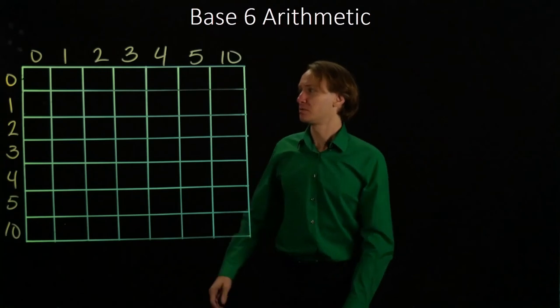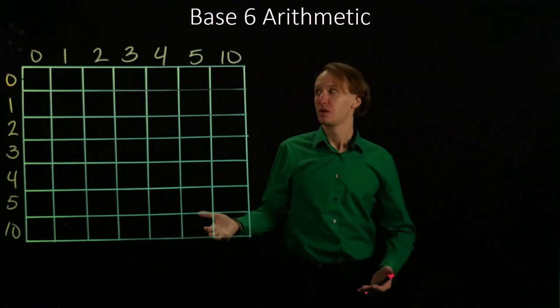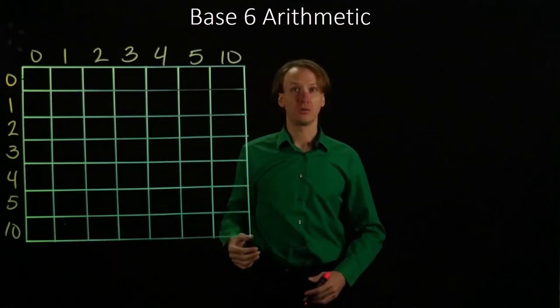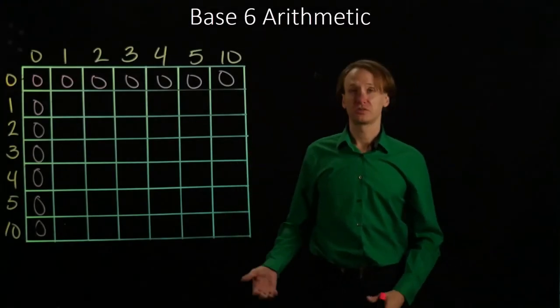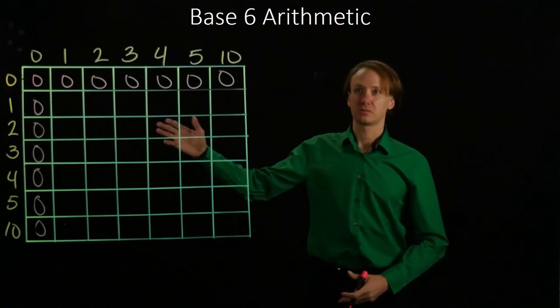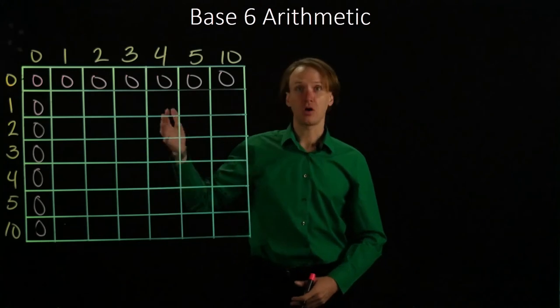To begin with, we know that 0 times anything is 0, so I can easily fill in the 0 rows and column. Now, 1 is almost as easy. 1 times anything is the anything, so I'm going to just write down whatever the other thing is in that row or column.